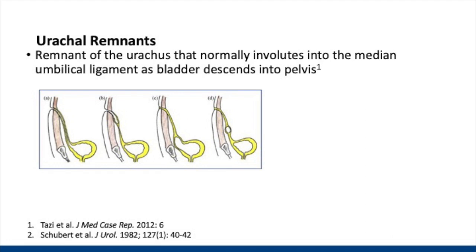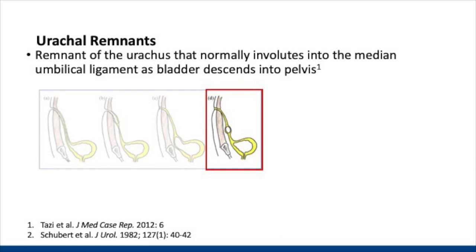Urachal remnants are a result of failure of involution of the urachus into the medial umbilical ligament, which usually happens as the bladder descends into the pelvis. There are four different types of urachal remnants: first, a patent urachus pictured in A; next, a urachal sinus pictured in B; C, a urachal diverticulum; and last, as seen in this case, a urachal cyst.